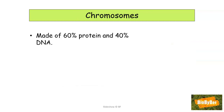Chromosomes are made of DNA and protein. 60% of a chromosome is actually made of protein and 40% is made of DNA. DNA is a complicated chemical, and we are quite happy at the moment to simply call it DNA.